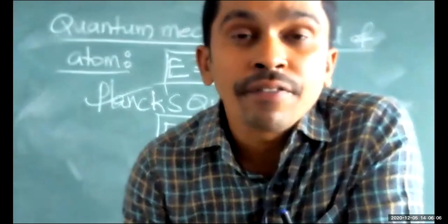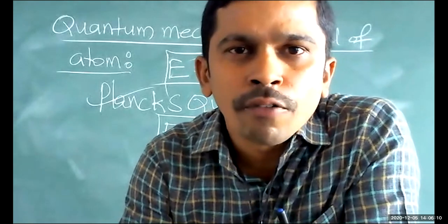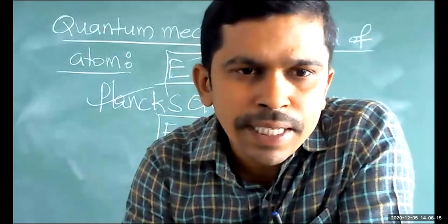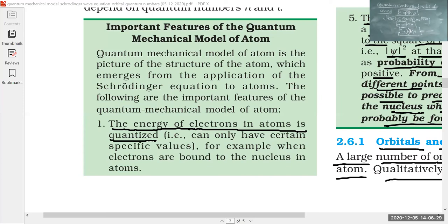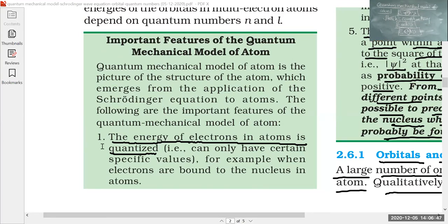With the help of Planck's quantum theory and Niels Bohr's model of atom, the quantum mechanical model was explained by Schrödinger. We will now see the important features of the quantum mechanical model of atom. The first postulate is: the energies of electrons in atoms are quantized — according to Planck's quantum theory. The second point is: the existence of quantized electronic energy levels is a direct result of the wave-like properties of electrons.